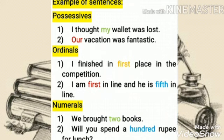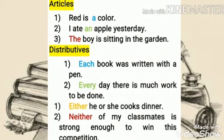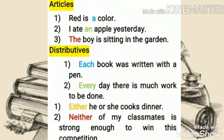Next, numerals: 'We brought two books.' 'Will you spend a hundred rupees for lunch?' Here, 'two' and 'hundred' refer to numerals. Articles: 'Red is a color.' 'I ate an apple yesterday.' 'The boy is sitting in the garden.' Here, 'a' and 'the' are called articles. Distributives: 'Each book was written with a pen.' 'Every day, there is much work to be done.' 'Either he or she cooks dinner.' 'Neither of my classmates is strong enough to win this competition.' Here, 'each,' 'every,' 'either,' and 'neither' are called distributives.